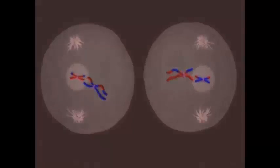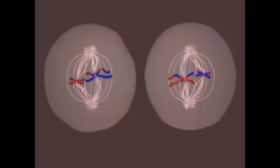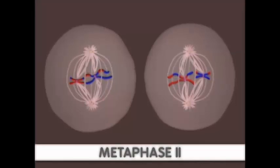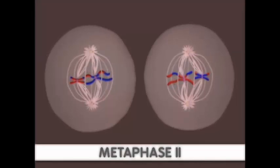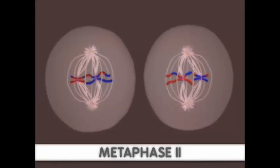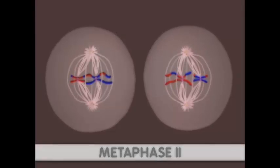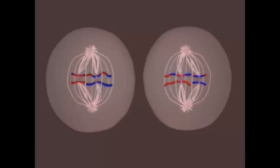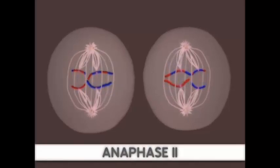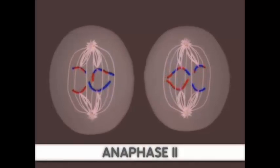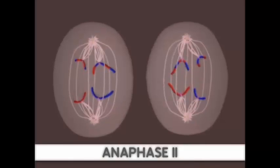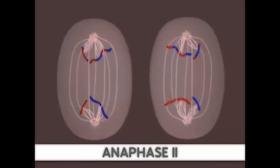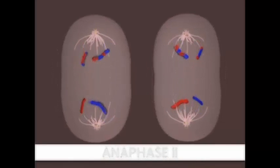The next phase of meiosis I is called metaphase I. Here, the synapsed chromosomes align at the equator of the cell. The chromosomes align randomly, which results in different combinations each time meiosis occurs. The next phase is anaphase I. During this phase, homologous chromosomes separate and migrate to the two poles of the cell. Importantly, the sister chromatids remain attached at their centromeres.